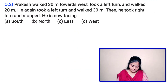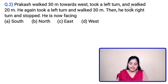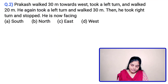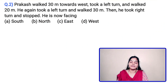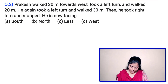Consider the second question: Prakash walked 30 meters towards west, took a left turn and walked 20 meters. He again took a left turn and walked 30 meters, then took a right turn and stopped. He is now facing: Option A: south, Option B: north, Option C: east, Option D: west. In this question, they have considered only four main directions, so let us draw the diagram accordingly.